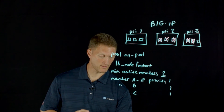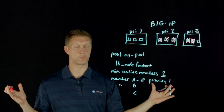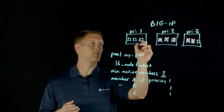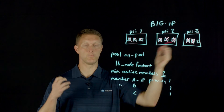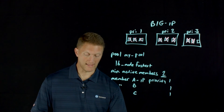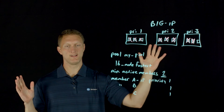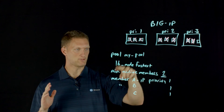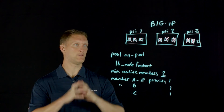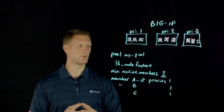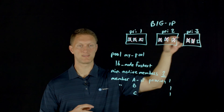One more thing worth pointing out: let's say every single pool member is down except for just one — and it doesn't have to be in priority group three, it can be any one. Even though you don't have two active members, that one remaining member would still get all of the traffic. So even though minimum active members is two, if only one is left, it still gets traffic. Every single member would have to be down before none of them get traffic. The minimum active setting doesn't automatically shut down the last remaining member.